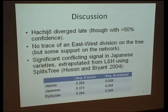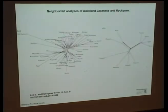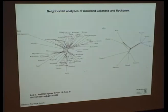We can look at non-tree-likeness in other ways — for instance, a neighbor-net analysis — where we find the Ryukyuan languages in Figure B are fairly tree-like with a little bit of reticulation, whereas in Figure A the Japanese varieties are a lovely little mess.